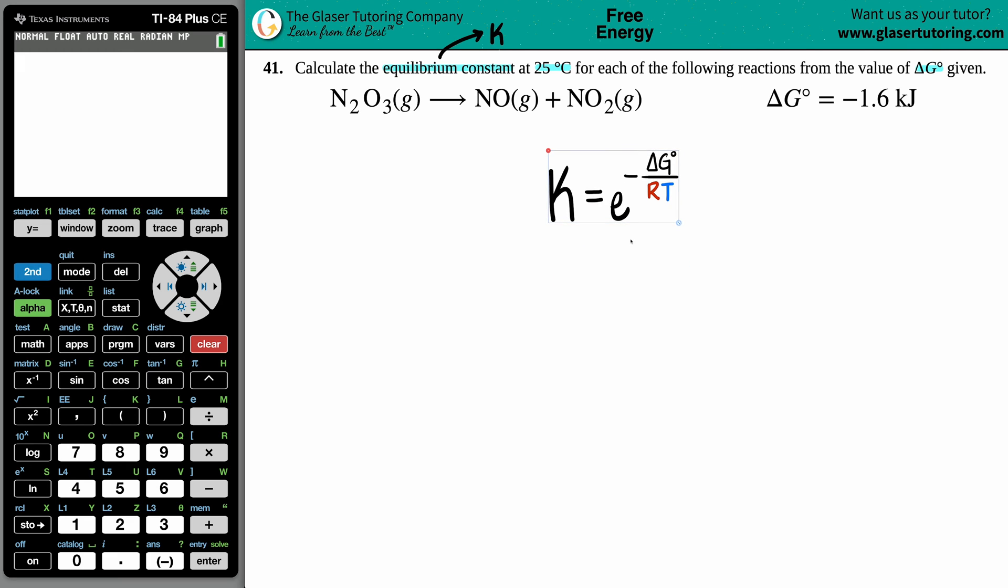It's K equals the e button on the calculator, all raised to the negative ΔG divided by RT. So I got three units here that I have to deal with. Well, let's start with the R value. Keep in mind that the R value is always a constant number, right? R = 8.314 because we're talking about energy.